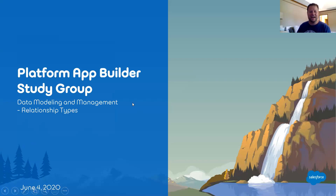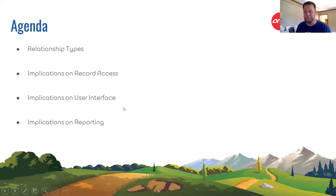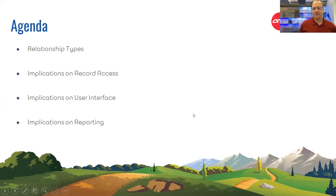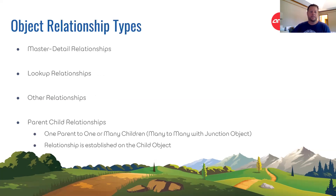So I'm the first guinea pig here, presenting on relationship types — everything you ever wanted to know about relationship types. I'm relatively new as a certified admin, not super new to Salesforce, but anyone who wants to jump in, add something, or correct something, please do. I'll keep this around 20 to 30 minutes. I'll cover relationship types, how they affect record access, users, and reporting.